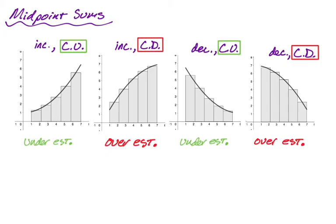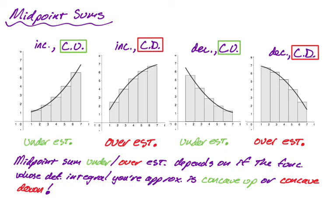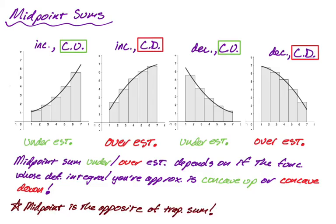Concave up gave us an underestimate for a midpoint, and concave down gave us an overestimate for a midpoint. The midpoint sum will under or overestimate depending on if the function is concave up or concave down. The way I personally remember this: I just remember that the midpoint sum is the opposite of the trapezoidal sum. It's easy to draw the trapezoidal sums and see when you're getting over or underestimates — I just remember the midpoint is the exact opposite. If the trapezoid is underestimating, the midpoint is overestimating, and vice versa.